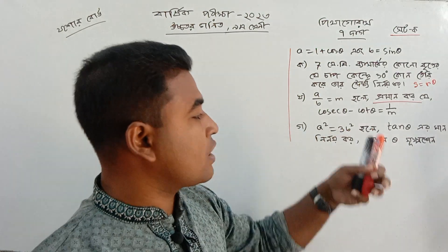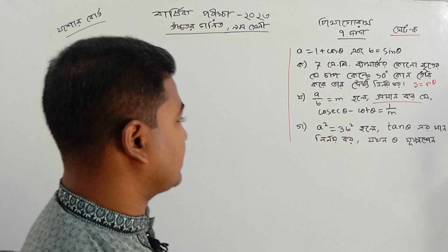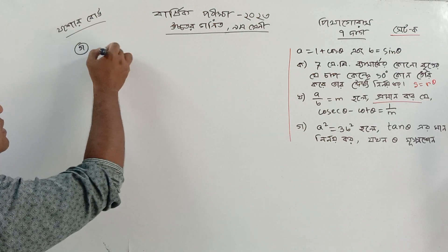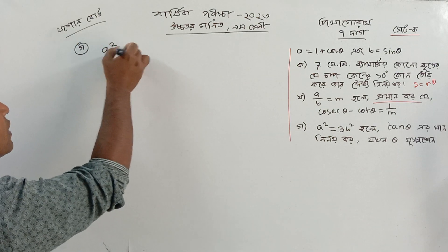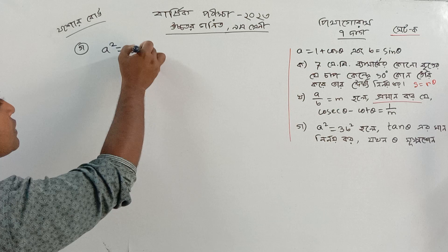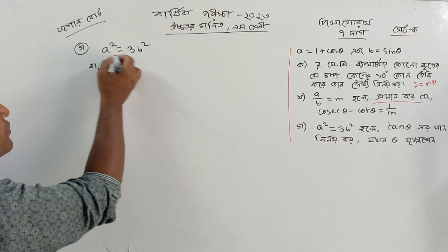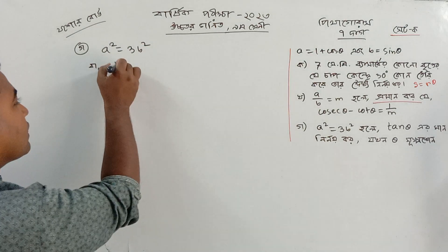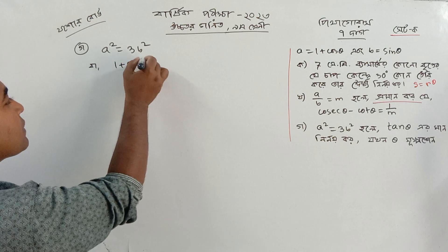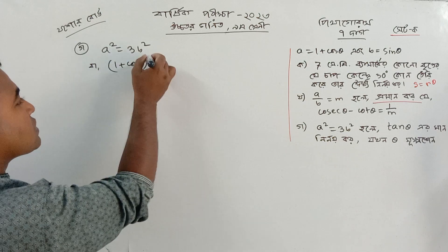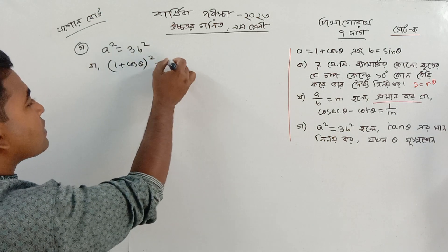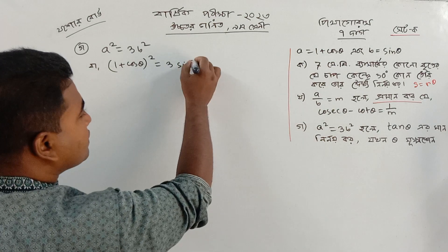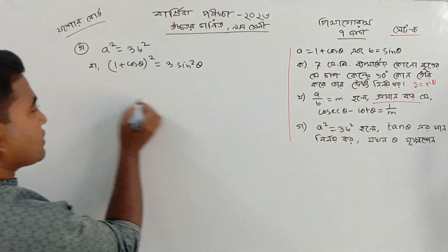A square equal to 3B square. What is A square? That means, what is A square? 1 plus cos theta, whole square. And B means sin — sin square.